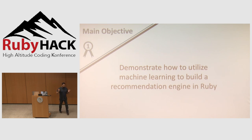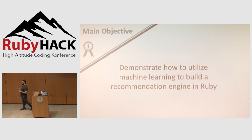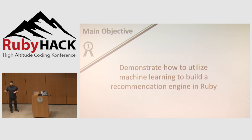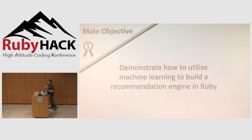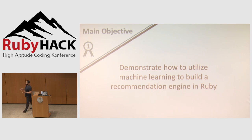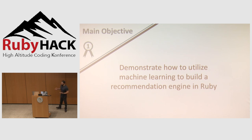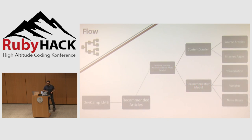When I was preparing this talk, I had a hard time picking out how I wanted to start it off. I decided to take the approach of making it like a real project. Whenever I'm building out some type of code project, the very first thing I try to do is pick out the main objective. So the main objective for this talk is to demonstrate how you can utilize machine learning to build a recommendation engine all in Ruby. By the end of it, if you have a feel for all the steps, the architecture, and the components needed, then I've accomplished my goal.